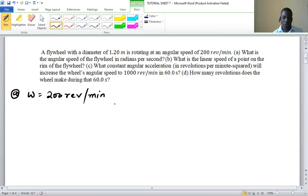Now we need to convert this rev per minute into radians per second. So we know that 1 rev is equal to 2π radians.